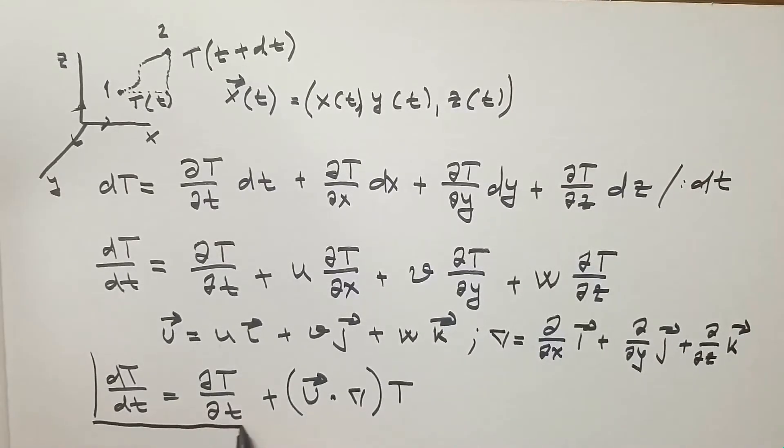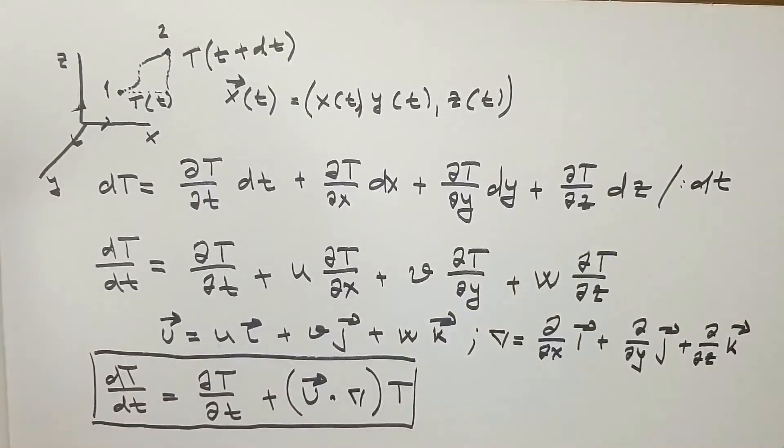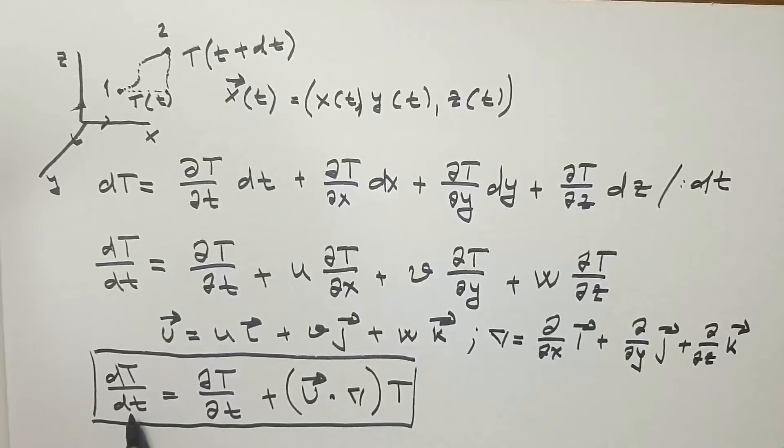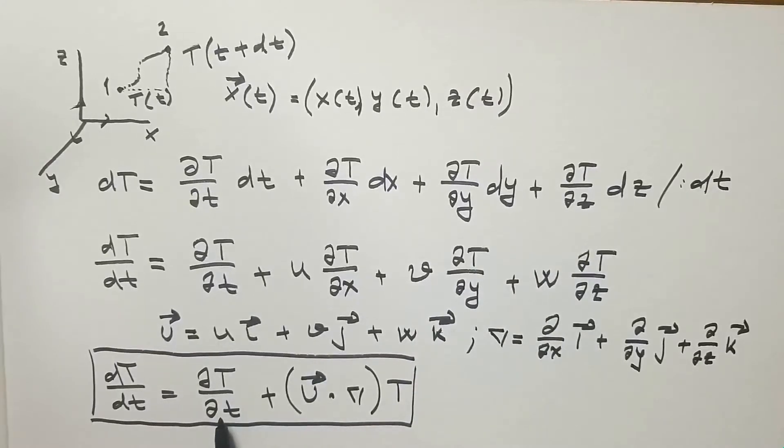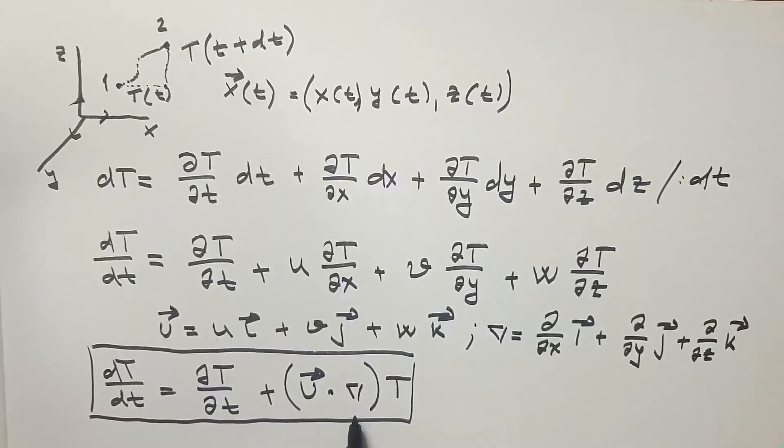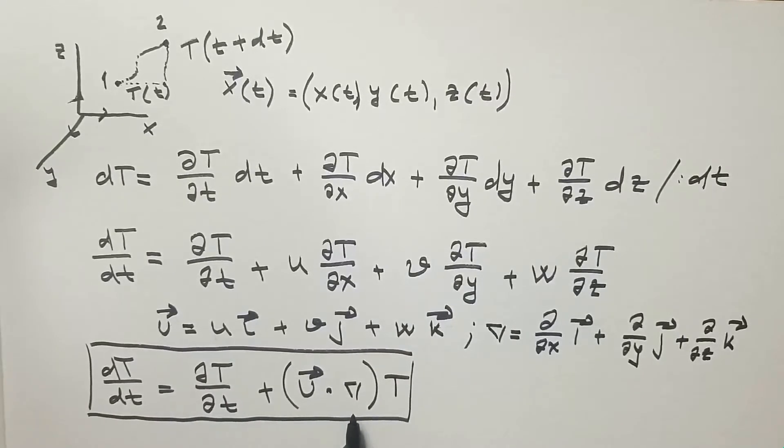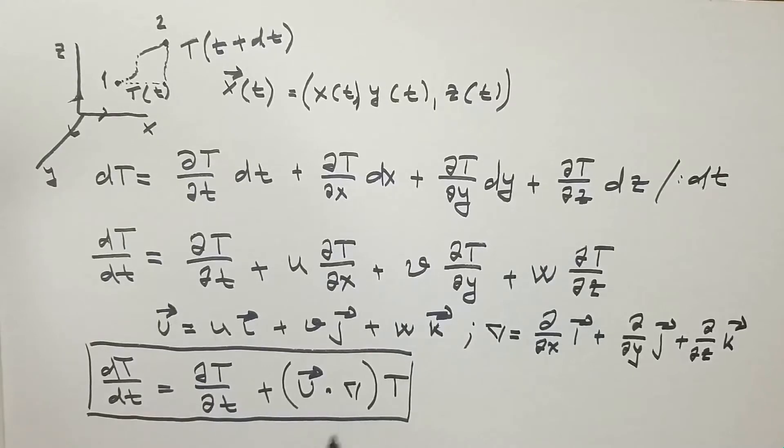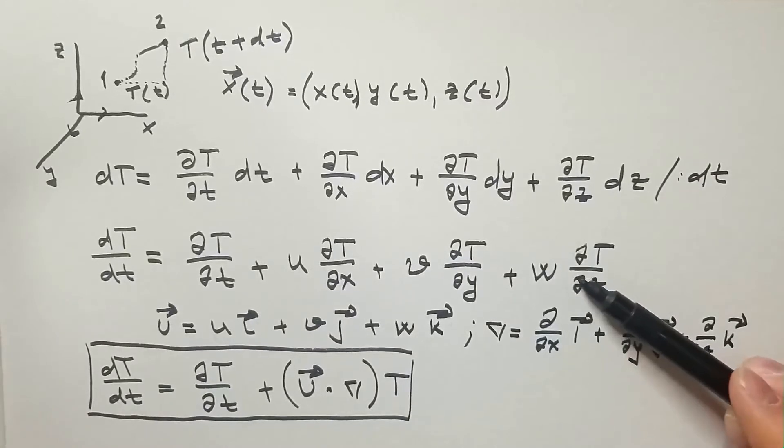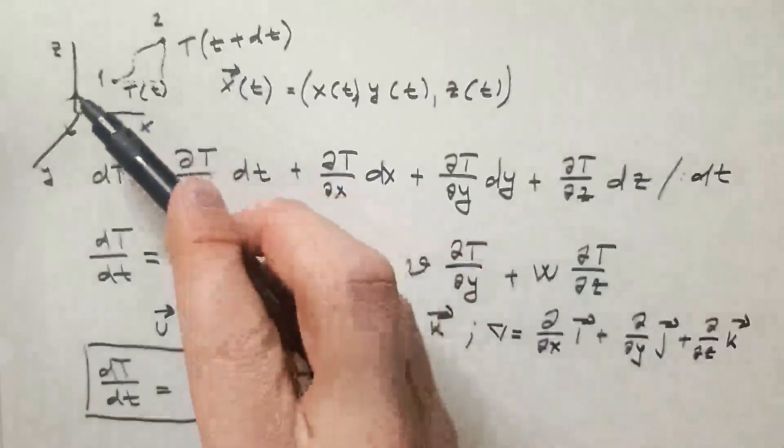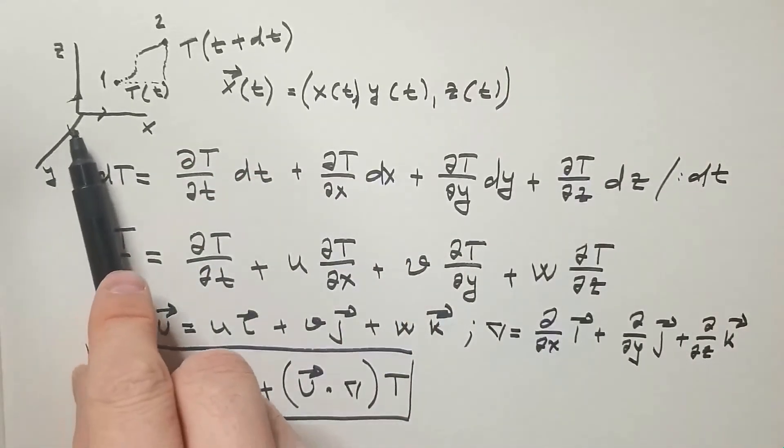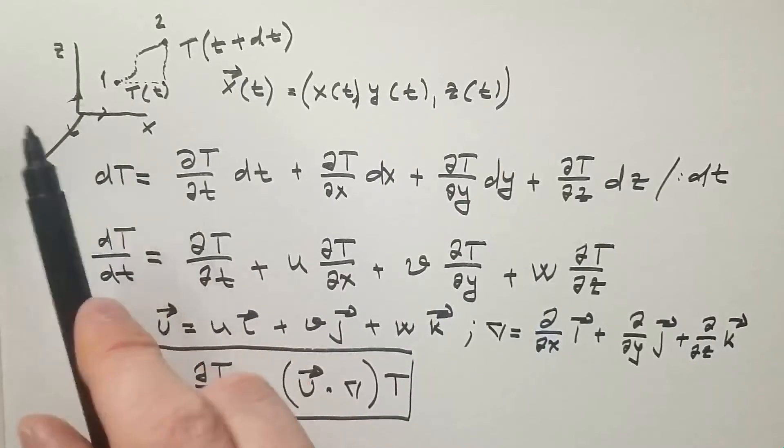And this is the definition of material or substantial derivative. It has two terms. We usually call this term unsteady term. And this one, in atmospheric sciences, we call it advective term. If you are studying fluid dynamics, then probably they call it convective term. So there is this change of terminology. In atmospheric sciences, we call convection the vertical component of this term. Anything in the vertical direction is convection. But if we have something in the horizontal direction or unknown direction, then we usually just say advection.